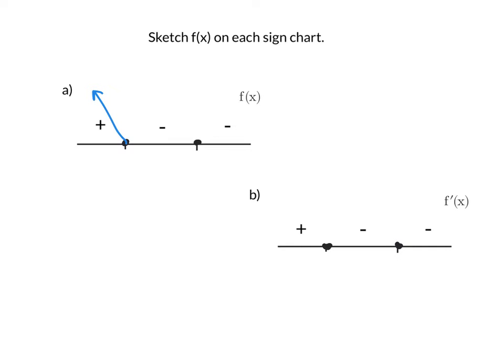And so on the next interval, when f of x is negative, that means it has to be below the x-axis, but the original function is continuous, so it's got to stay below and somehow get back over to that x-intercept there.